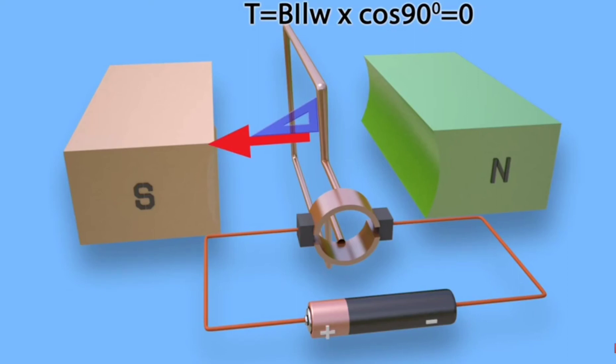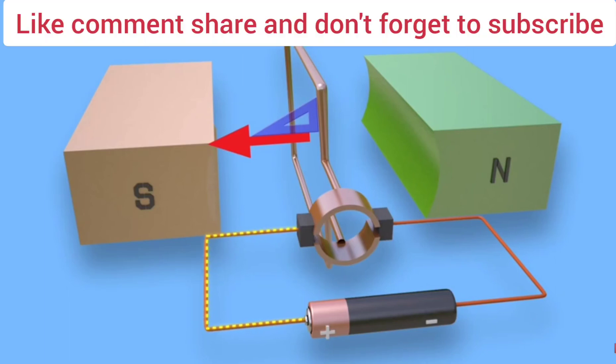After rotation of the turn, the turn comes to a vertical position with respect to the magnetic field. At this position, there is no current in the conductor because the turn conductor and brushes rest between two commutators. Hence, there is no force acting on the conductor.